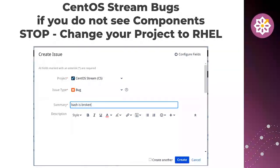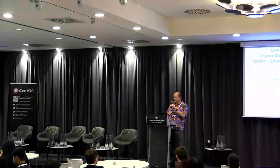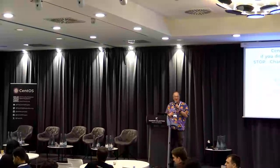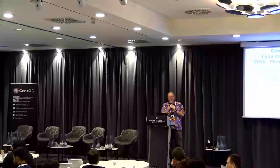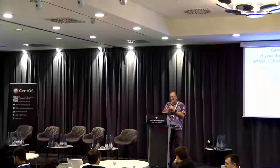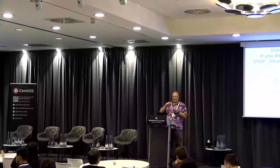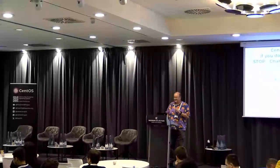Someone suggested renaming the CentoStream JIRA project to 'CentoStream Infra' to avoid confusion. Adam in the background said that's a good idea and we'll see. It's confusing not just for you — we don't like getting misrouted tickets either. It's confusing for everyone, so we will look at whether we can rename it.